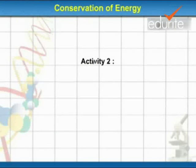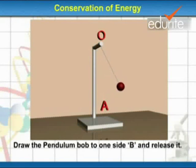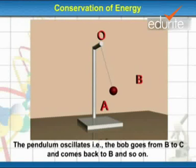Activity 2. Take a simple pendulum, suspend it from a stand. Note the normal position O-A. Draw the pendulum bob to one side B and release it. The pendulum oscillates, i.e. the bob goes from B to C and comes back to B and so on.